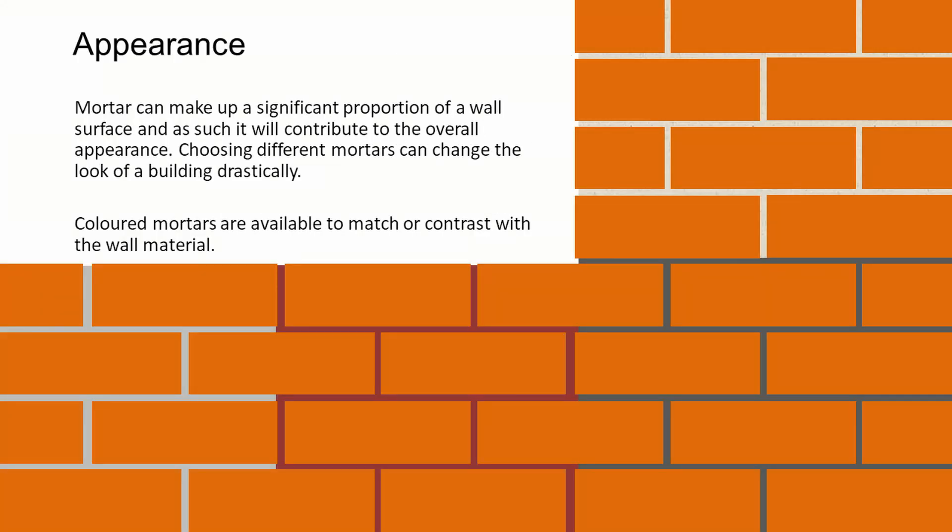Mortar makes up a significant proportion of a wall — in a basic stretcher bond wall it might be 18 to 20 percent of the overall surface we see. So choosing different mortars can change the look of a building drastically. Coloured mortars are also available, which can be used to match or contrast with the wall material being built.